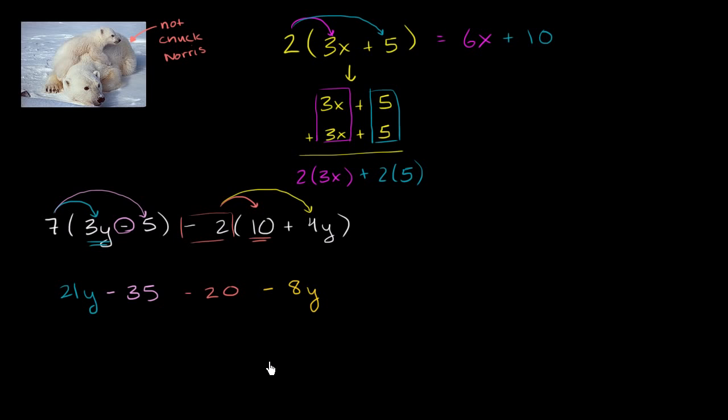And are we done simplifying? Well no, there's a little bit more that we can do. We can't add the 21y to the negative 35 or the negative 20 because these are adding different things or subtracting different things. But we do have two things that are multiplying y.